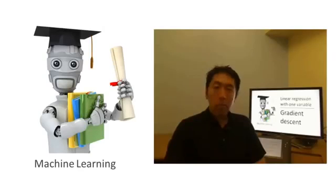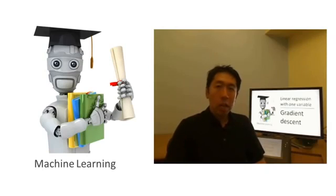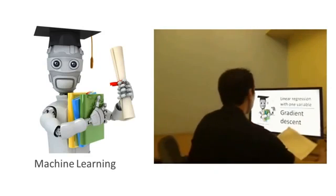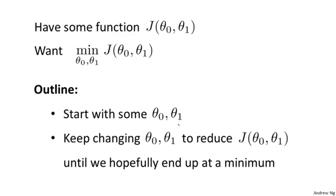So in this video, I'm going to talk about gradient descent for minimizing some arbitrary function j. And then in later videos, we'll take this algorithm and apply it specifically to the cost function j that we had defined for linear regression. So here's the problem setup. We're going to assume that we have some function j of theta 0 comma theta 1. Maybe it's a cost function from linear regression, maybe it's some other function we want to minimize. And we want to come up with an algorithm for minimizing j of theta 0, theta 1.